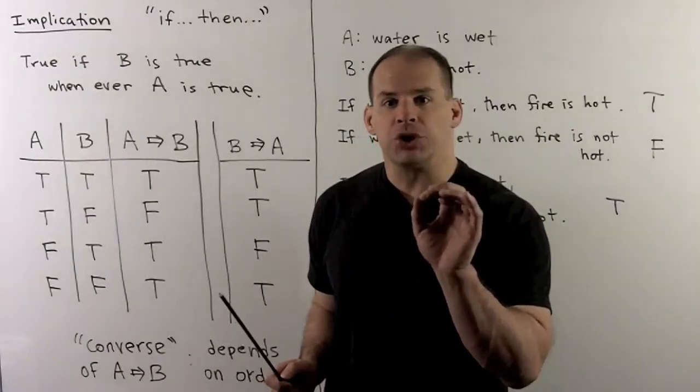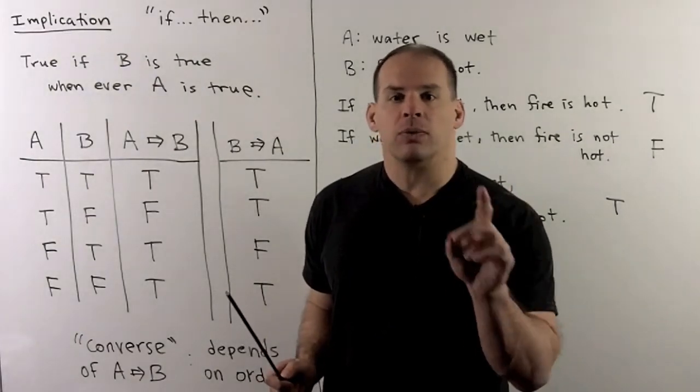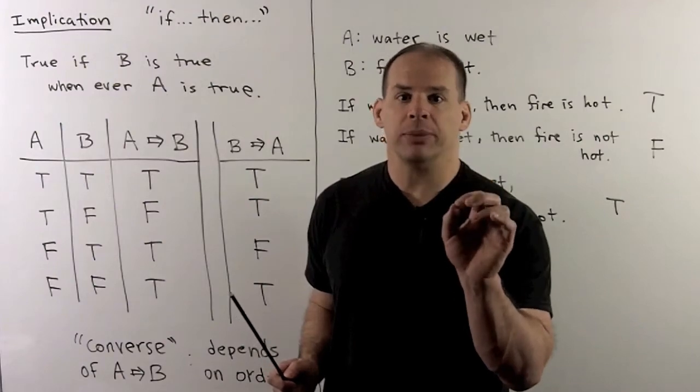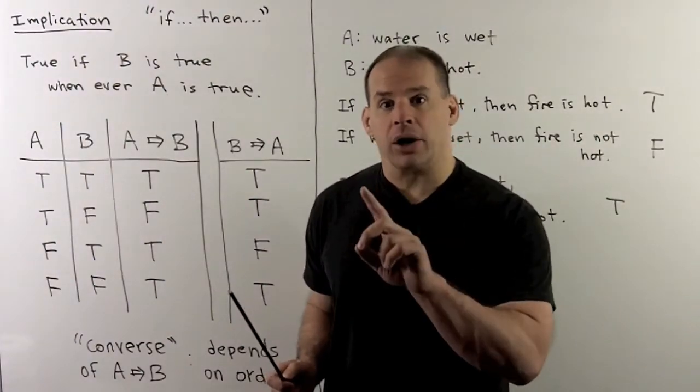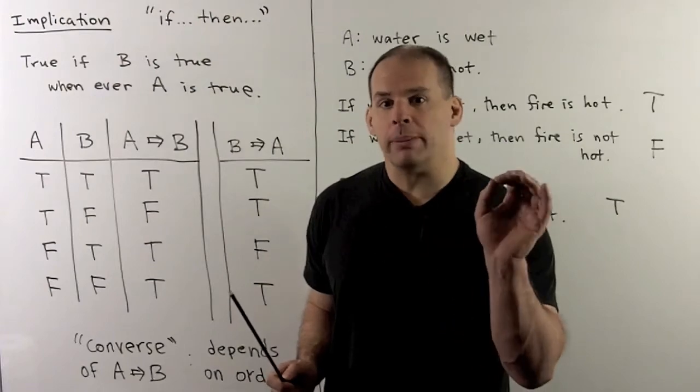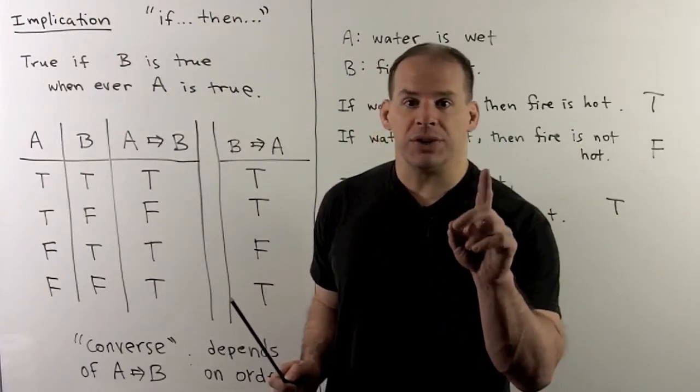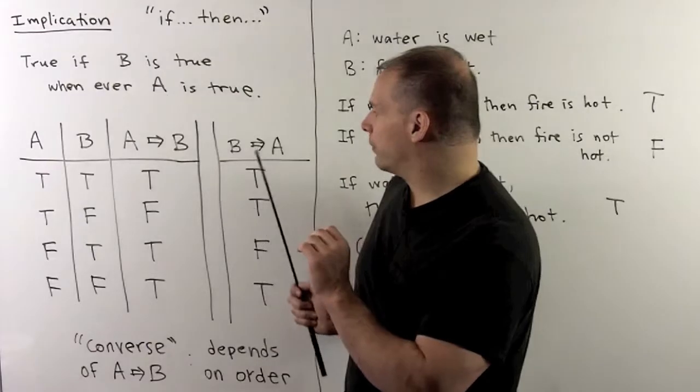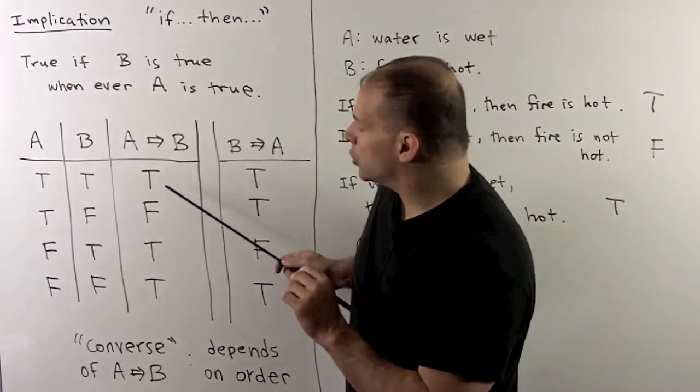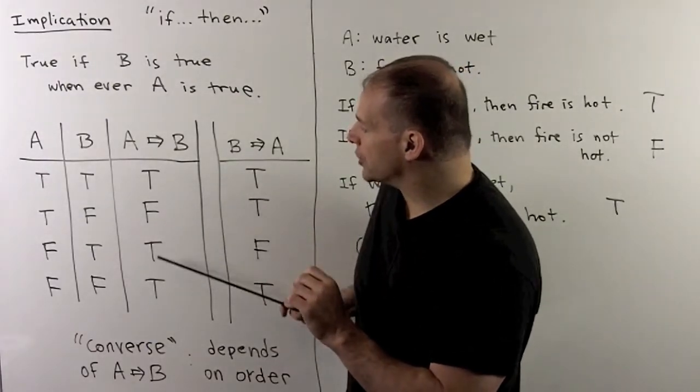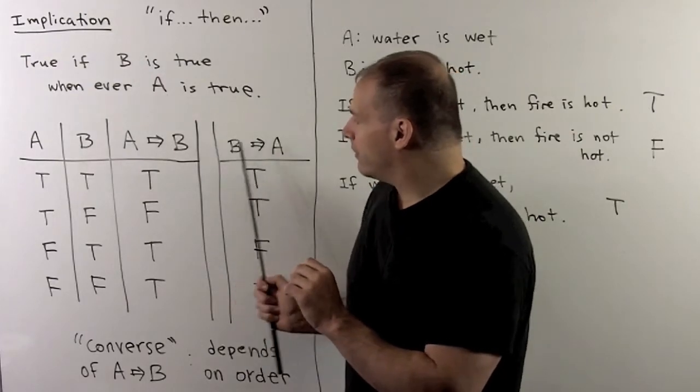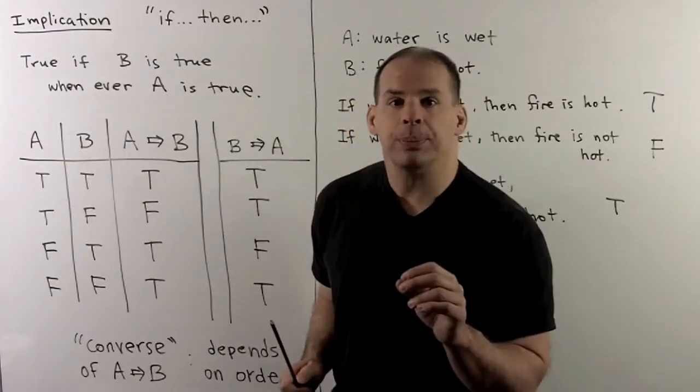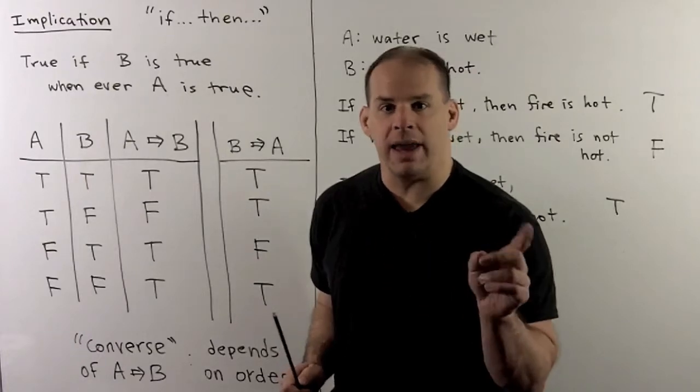Now, a new feature with implication for conjunction and disjunction, so, and, and, or. The order didn't matter. Here, order will make a difference. So, for instance, if we write out the truth table for B implies A, we're going to switch the order of the true and false in the middle. Now, we give B implies A a special name. We'll call that the converse of A implies B.